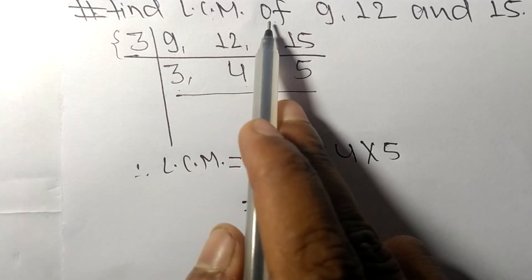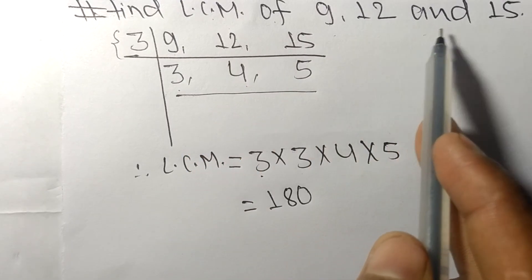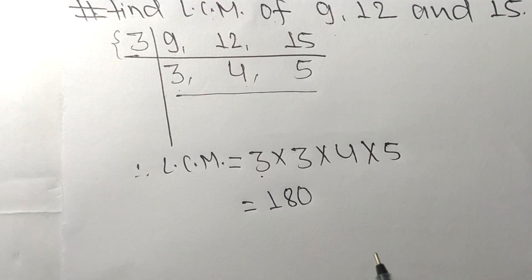So 180 is the LCM of 9, 12, and 15. This much for today, and thanks for watching.